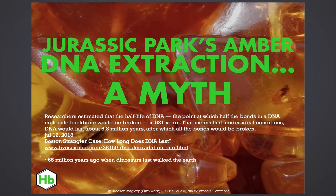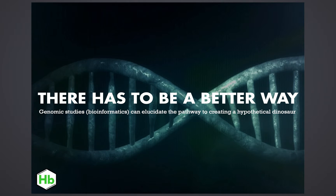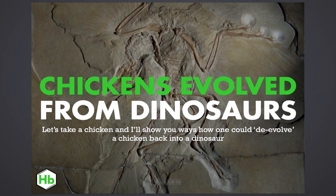So all of the DNA has already been degraded. There's no way we're going to be able to get it out of the mosquito, even if it's in amber. In fact, often what happens is the DNA degrades from the inside out, so the internal side of the mosquito is going to degrade faster. So then how do we do this? There has to be a better way. Genomic studies and bioinformatics can elucidate the pathway to creating a hypothetical dinosaur. And what we know is that chickens evolved from dinosaurs — actually, all avians and all birds did. So let's take a chicken and I'll show you how one could de-evolve a chicken back into a dinosaur.